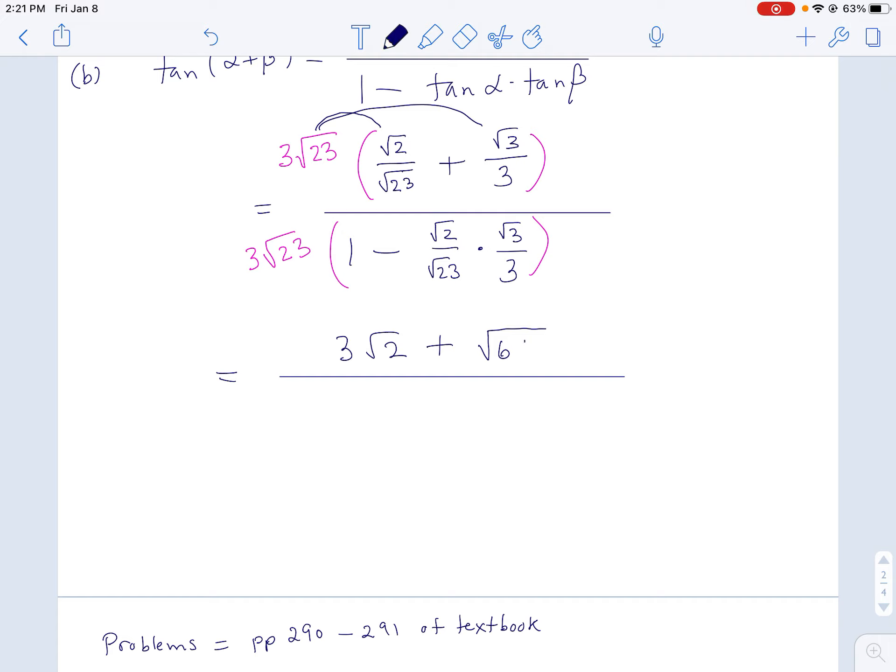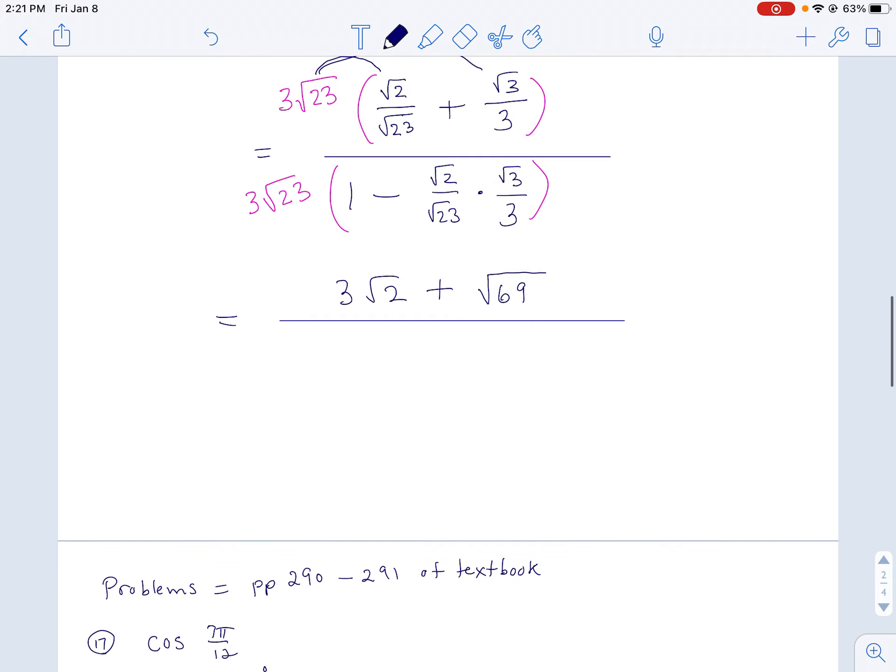Sorry, I'm having a tough time writing that down. In the denominator of this massive fraction, I get 3 root 23 times 1, which is 3 root 23.